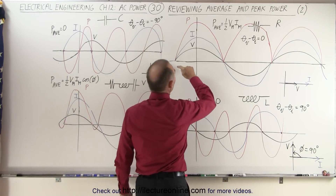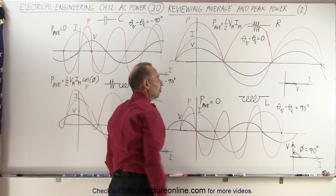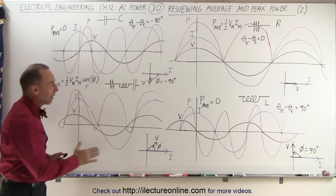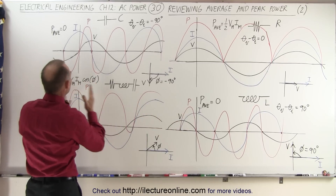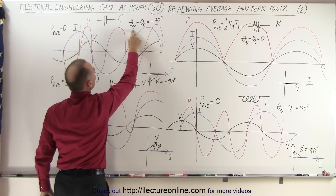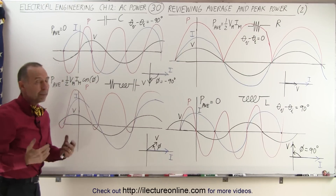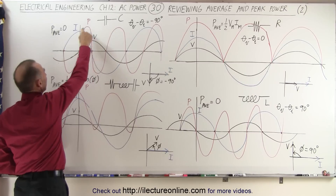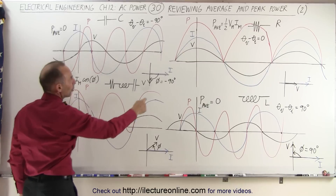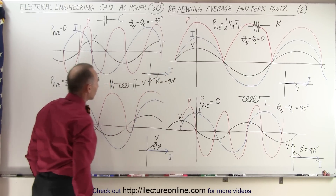Notice that the power for the purely resistive circuit is always positive, so there's no negation of the power because the current does not go negative. When we have a purely capacitive circuit, we have a similar result as for the inductor, except the phase shift is different. Now the current will lead the voltage by 90 degrees, so the phase shift between voltage and current is negative 90 degrees. The average power delivered is still equal to zero, because we have alternating negative and positive power that cancels out. The voltage is 90 degrees behind the current.